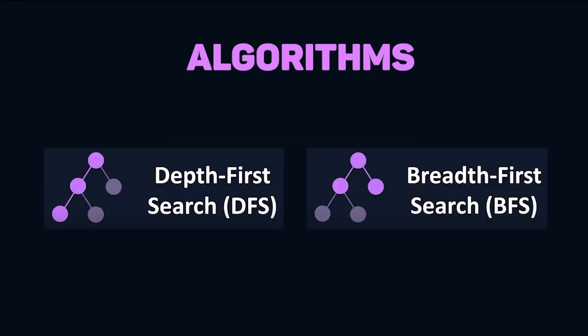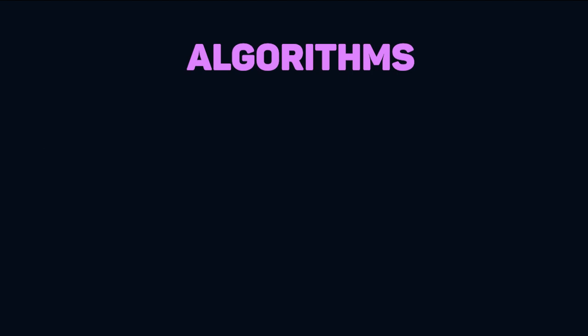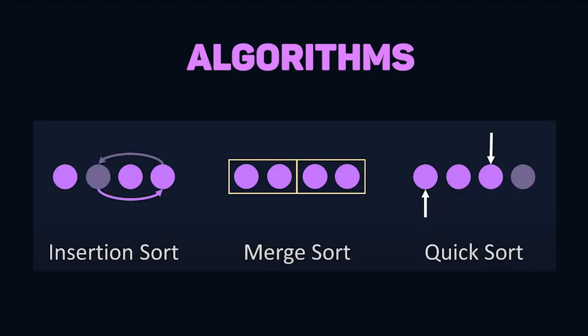Depth-first search and breadth-first search, often shortened to DFS and BFS, are tree and graph traversal algorithms. In depth-first search, you go all the way down one branch before backtracking to the rest, whereas in breadth-first search, you explore every node at the current level before moving down to the next level. There are many other algorithms to know, primarily various sorting methods. However, these three will cover the overwhelming majority of questions, so you should start there.